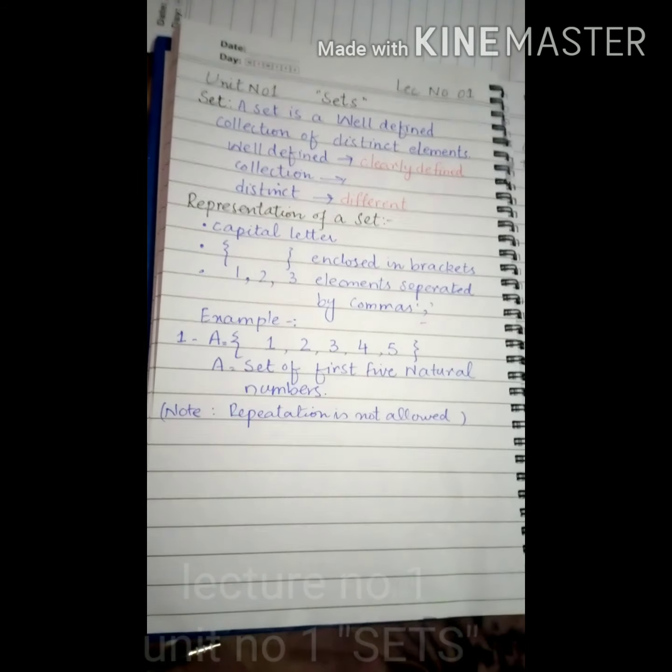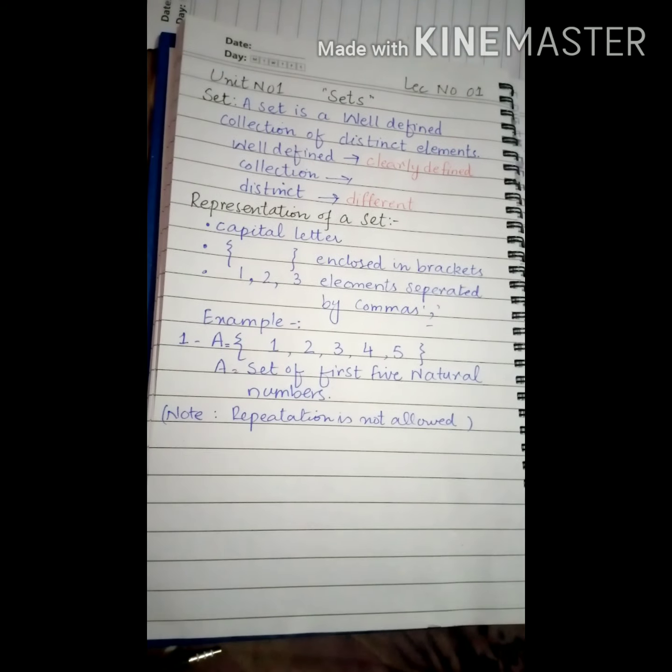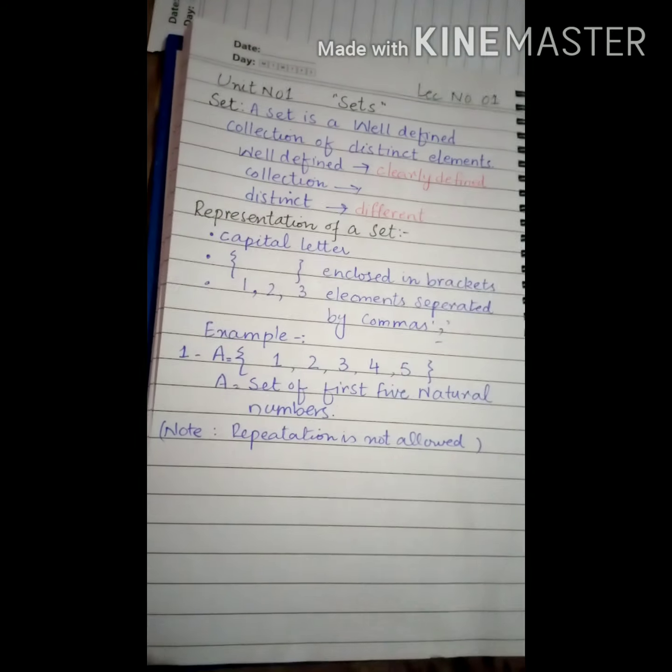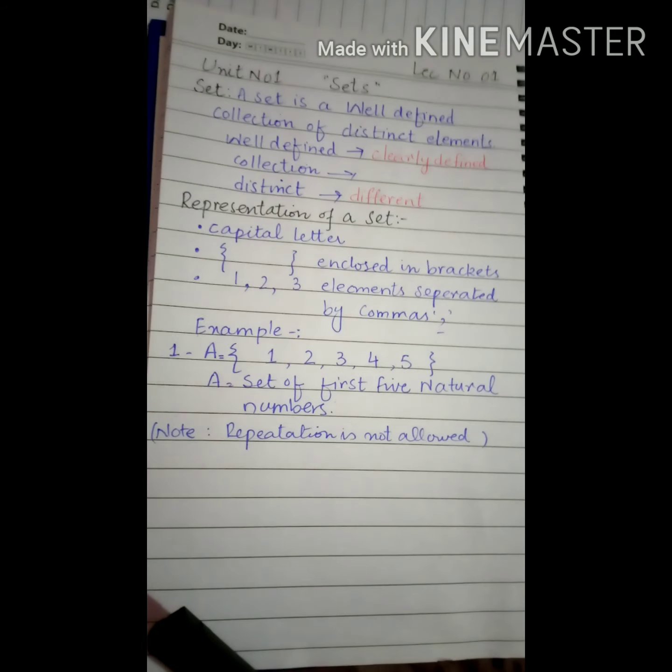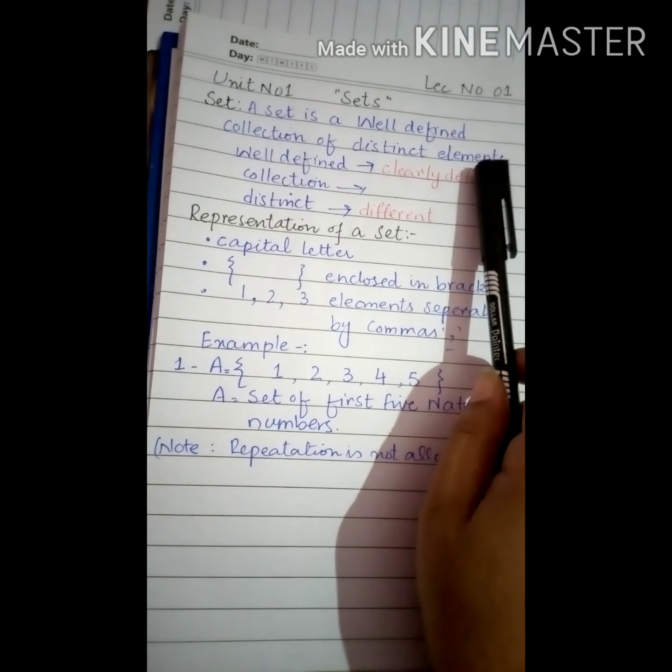Assalamu alaikum student. Let's start with lecture number one of book seven. This is unit number one named sets. First of all we need to know what is a set. A set is a well defined collection of distinct elements.